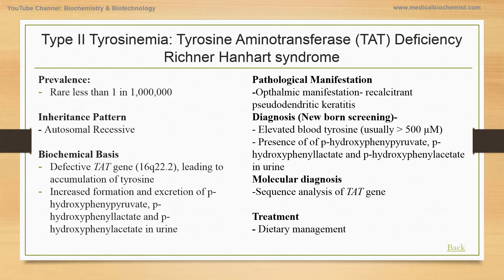The biochemical basis is a defective TAT gene on chromosome 16 long arm, causing increased tyrosine. The increased tyrosine activates an alternate pathway leading to the formation of hydroxyphenylpyruvate, hydroxyphenyllactate, and hydroxyphenylacetate, which can be seen in the urine.